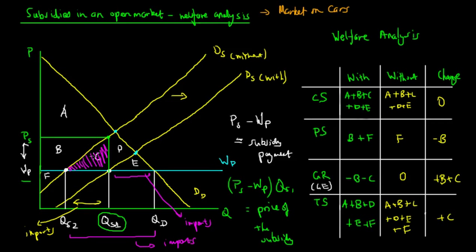As a result of reducing or removing subsidies, total surplus increases by C, which is gained as government revenue that can be invested in areas of comparative cost advantage — such as mining — rather than preserving an inefficient car manufacturing market. The deadweight loss C that existed under the subsidy is eliminated, making the economy more efficient and maximizing long-term living standards.